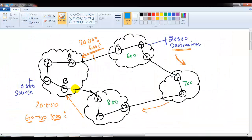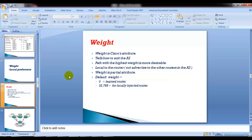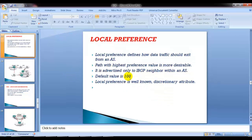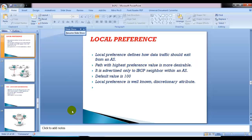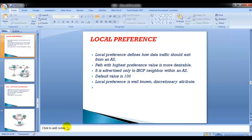Now let's understand local preference. Local preference also defines how data traffic should exit the AS. The highest value is preferred here as well. The default local preference value is 100, but we can increase it as per our requirement. The major difference from weight is that local preference is advertised to all internal BGP neighbors within the AS.